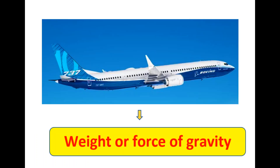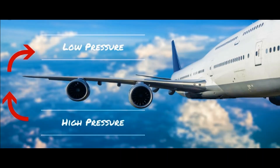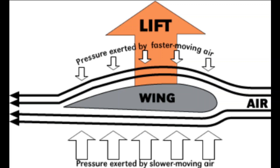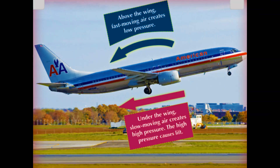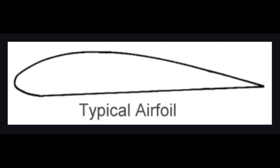The force of gravity pulls the aeroplane down towards the earth. However, when the aeroplane starts to run, the air moves faster on top of the wing. The air movement at the bottom of the wing is slower. This causes reduced air pressure at the top of the wing. The high pressure at the bottom exerts the force lift upwards, and this lift is higher than gravity, making the aeroplane take off. The aerofoil shape of the wings facilitates the lift.